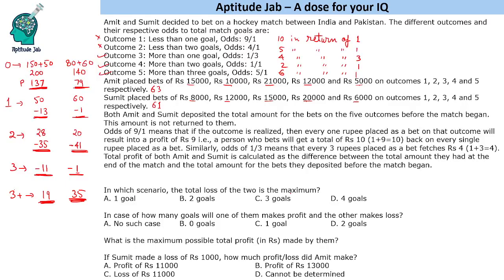In which scenario is the total loss of the two maximum? Total loss is maximum when there are two goals. This could have been answered without full calculation: in case of one or two goals, only one outcome is possible each time, and in case of two goals only outcome three is possible. Outcome three has the minimum return — four in return of three — so the loss is maximized there. As for how many goals result in one person making a profit and the other a loss, looking at the results, either both are making profit or both are making a loss, so there is no such case.